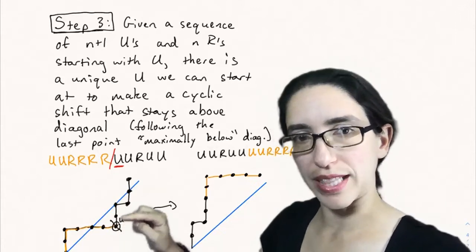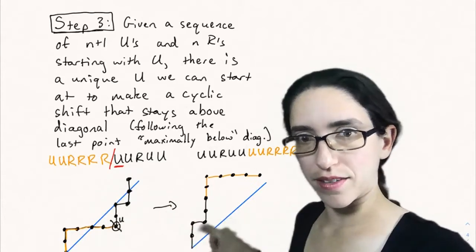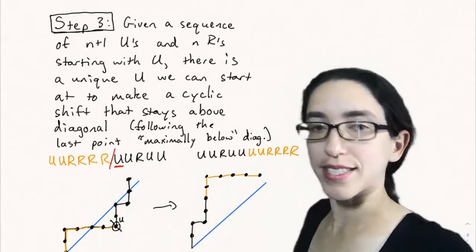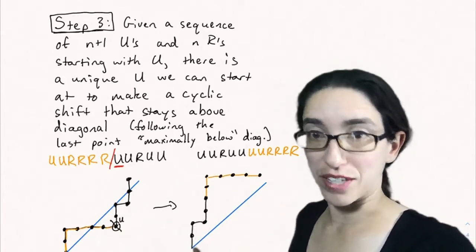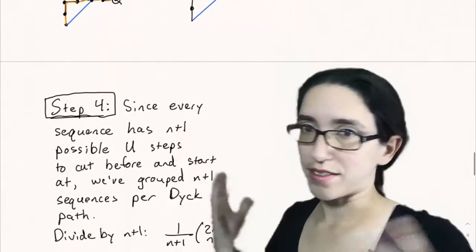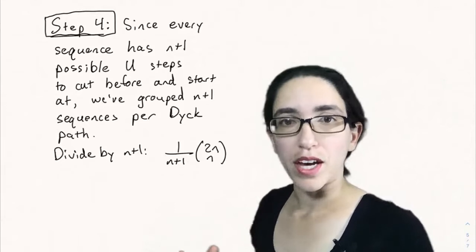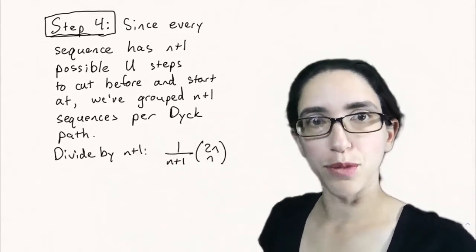And then the up step following that, if you switch that, you'll see that the remaining path has to stay above the diagonal because somehow this is still the minimal point below the diagonal, even after you shift it. I'm not going into all the details, but that's the idea of how we can find this unique Dyck path in our groupings.